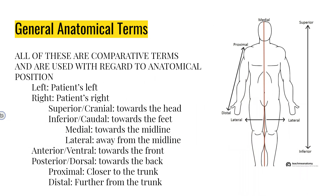Moving on to some general anatomical terms — the most important takeaway is that all these terms are relative and must be used in comparison to another structure. We've got left and right; superior and inferior, which is the same as cranial and caudal; medial towards the midline and lateral away from it; anterior and posterior, the same as ventral or dorsal — if you imagine a shark with its dorsal fin out of the water, that's towards the back, so ventral is towards the belly. And proximal and distal are generally only used in relation to the limbs, as being closer or further to the trunk of the body.